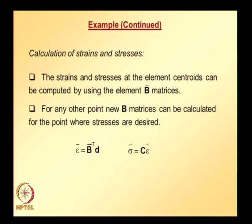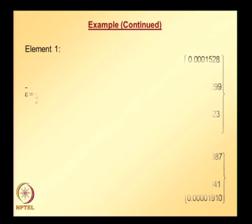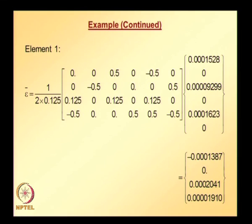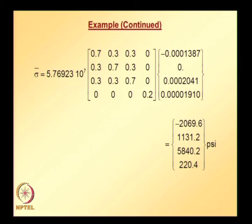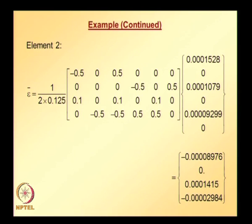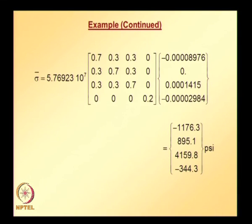Once we have the nodal solution, we can do post-processing. Strains and stresses at the element centroid can be computed using the element B-bar matrix. Strain at the element centroid is given by B-bar transpose times d, and stress is given by sigma-bar equals C times epsilon-bar. Since element 1 and element 2 have different centroids, these calculations must be done separately for each element.